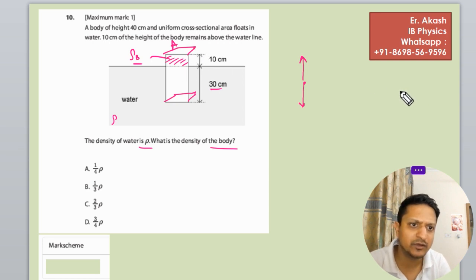So it's a body like this. The cross sectional area is A, so the volume will be length times A.